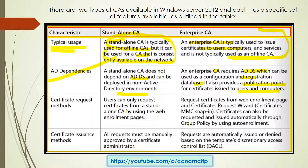Next is certificate request methods. Users can request a certificate from a standalone certificate authority by using the web enrollment pages. For enterprise, requests can be made via the web enrollment page, the certificates request wizard, or the certificate MMC snap-in. Certificates can also be requested and issued automatically through Group Policy using auto-enrollment.